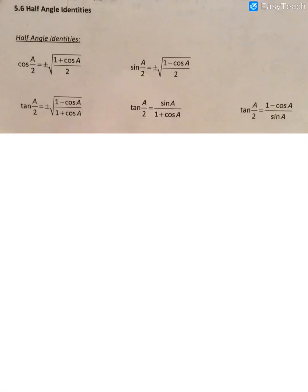Section 5.6: Half angle identities. These are half angle identities and they help us when we're trying to find the exact value of angles that we don't know on the unit circle, but are half the value of angles that we do know. There is one half angle identity for cosine, one for sine, but there are three for tangent.